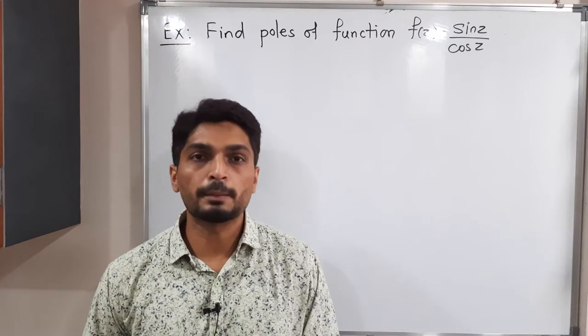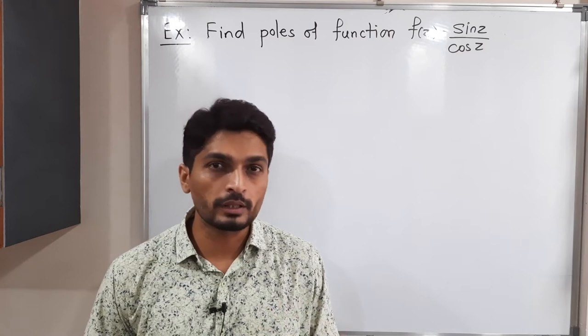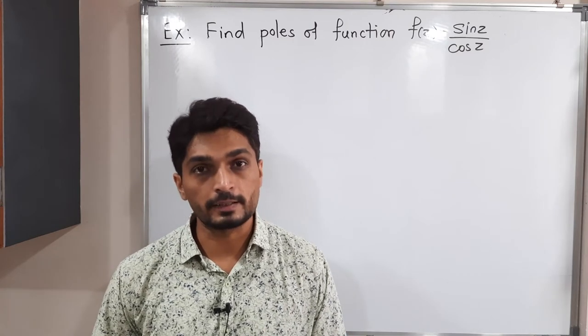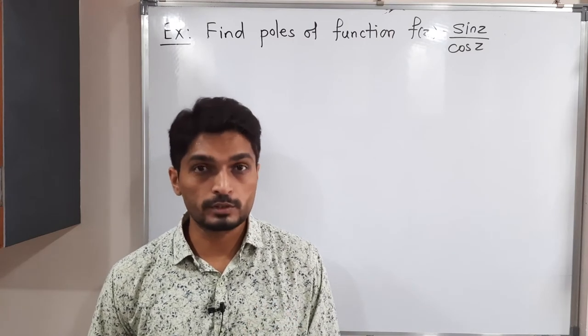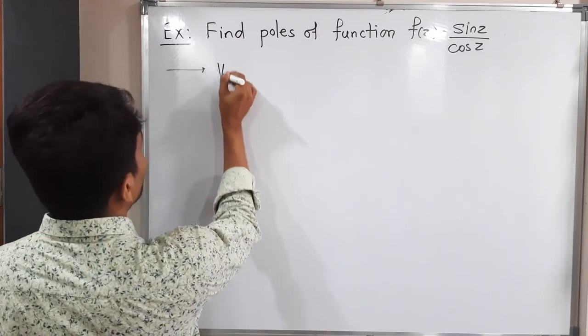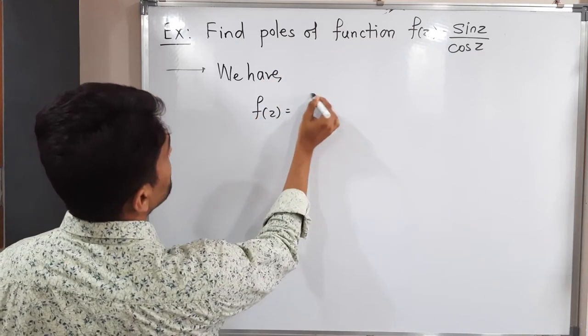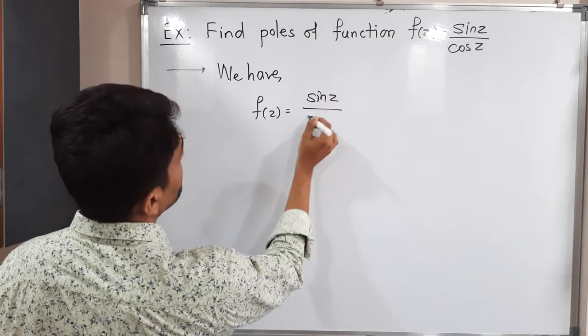Let us discuss this very simple example. We have a function sine z upon cos z, or it can be expressed as tan z. So we have to find its poles. Let us start. First of all, we will write the given function: f(z) equals sine z upon cos z.